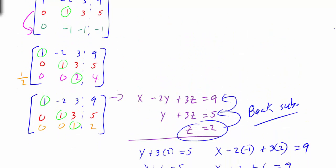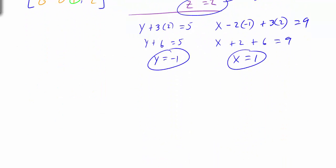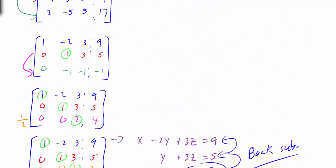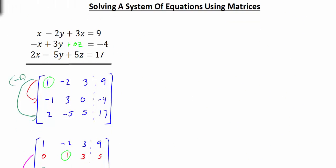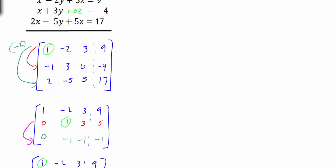Now, I want you to be familiar with this process, but I'm not really going to make you use it by hand as long as you have your calculator. We're going to look at how we can do that with the aid of our calculator. We want to type in this matrix: 1, negative 2, 3, 9, negative 1, 3, 0, negative 4, 2, negative 5, 5, and 17.